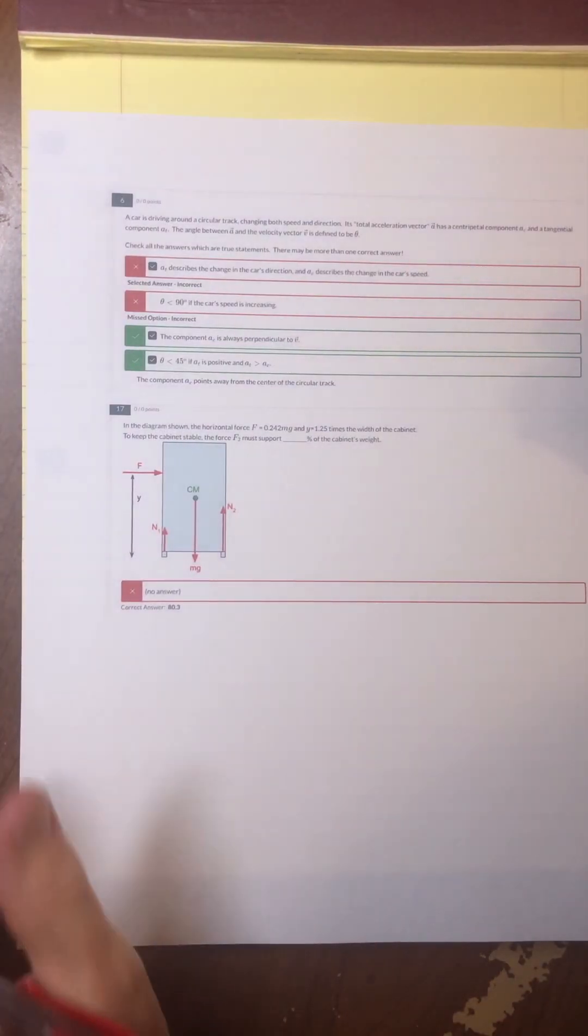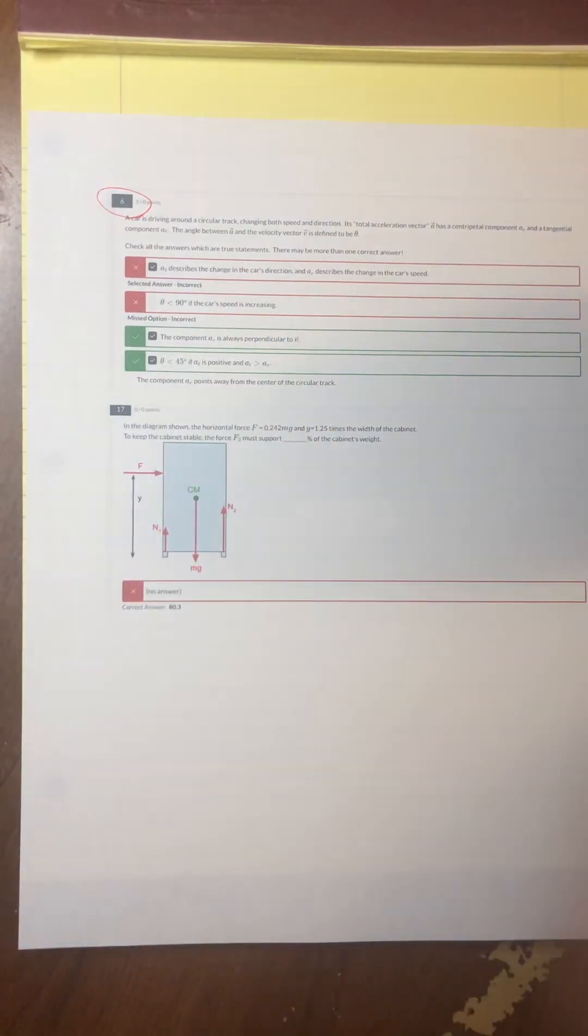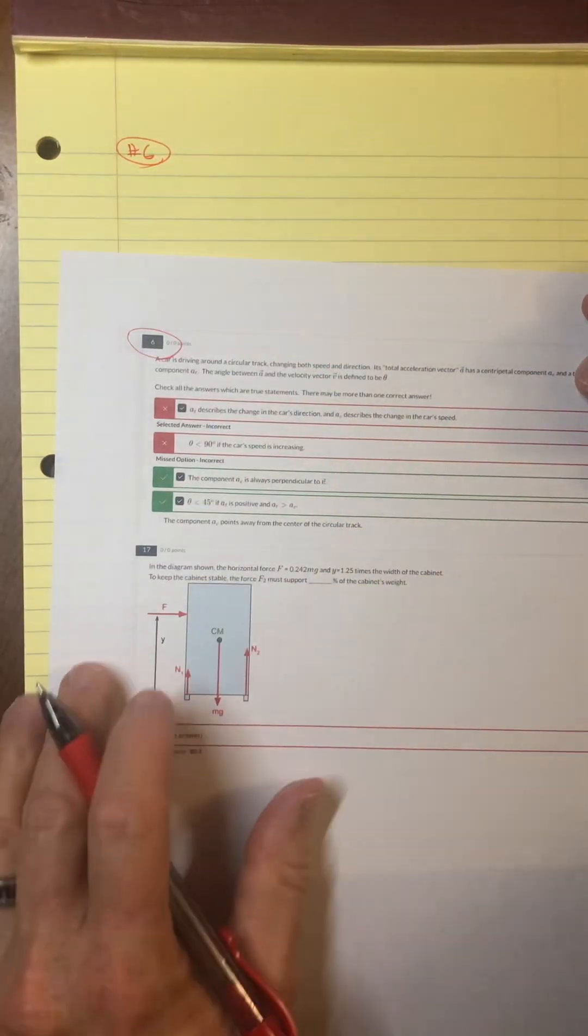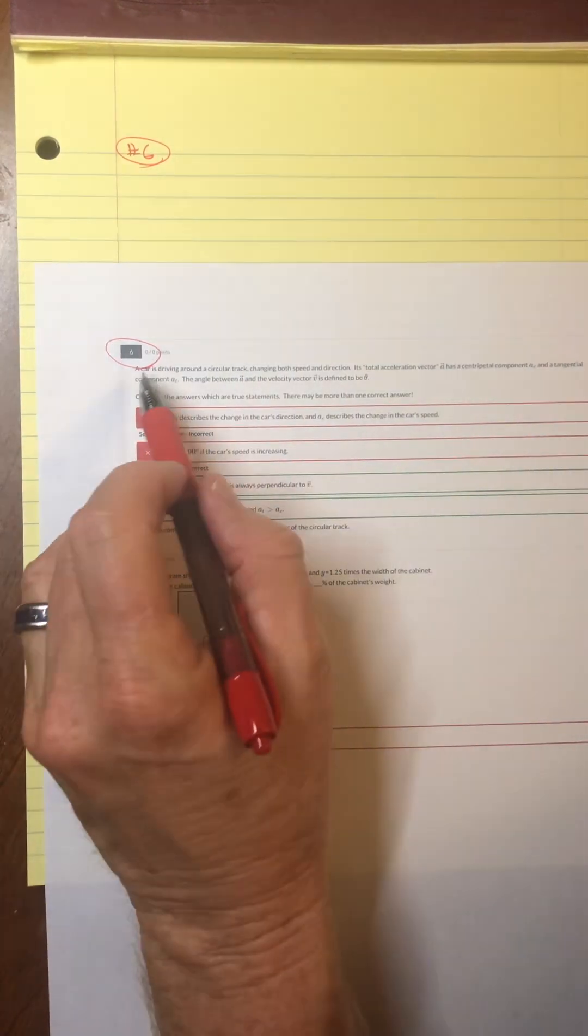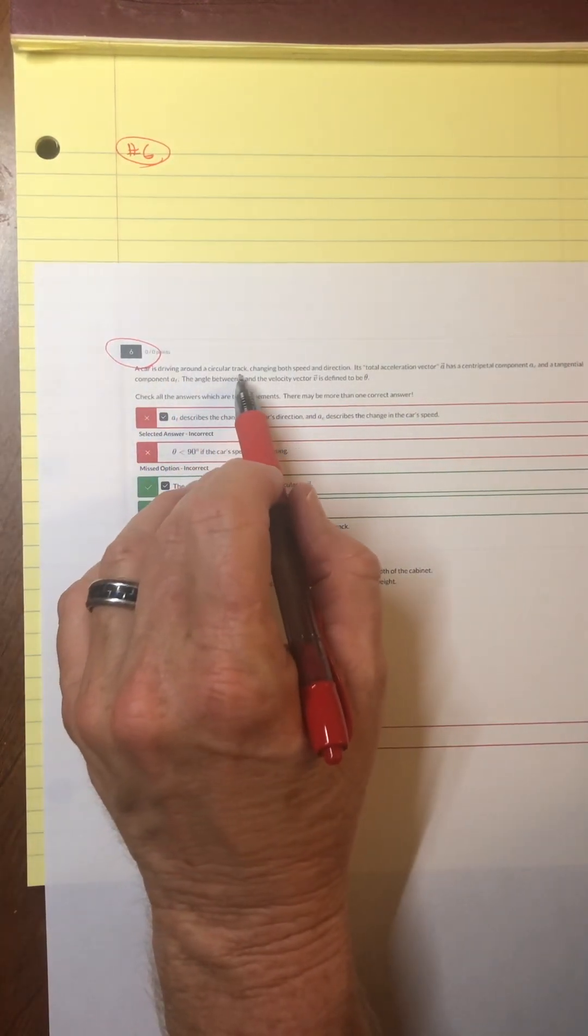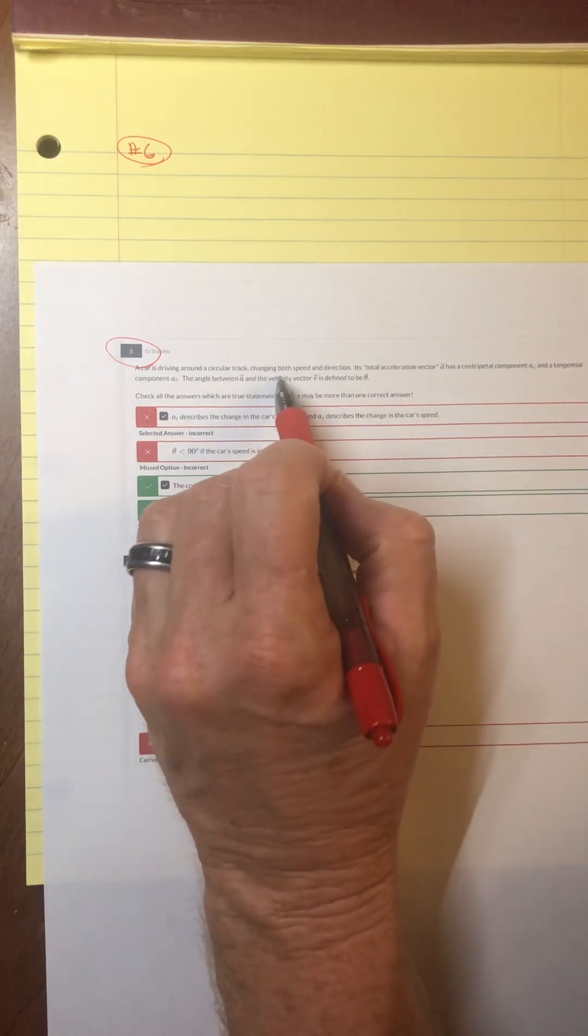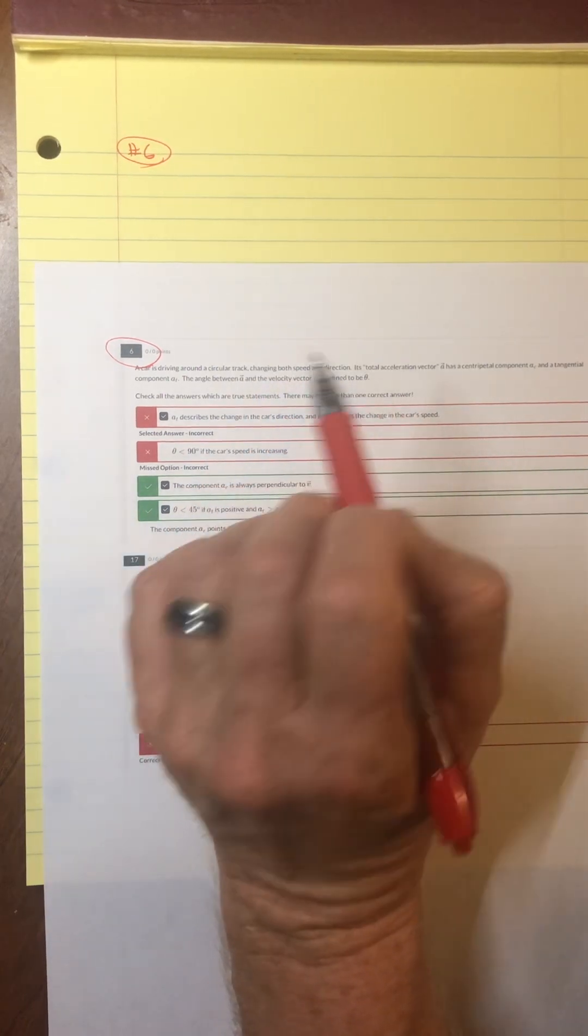All right, workshop students, let's continue on here. I have a couple questions here from the practice exam. I've done a bunch. I forget how many, but I printed them up on this new sheet. It looks like it's problem number six, so let me write that here. Number six, my little form here, and let's read this. A car driving around a circular track, changing both its speed and direction. Let me pause there and have a quick review.